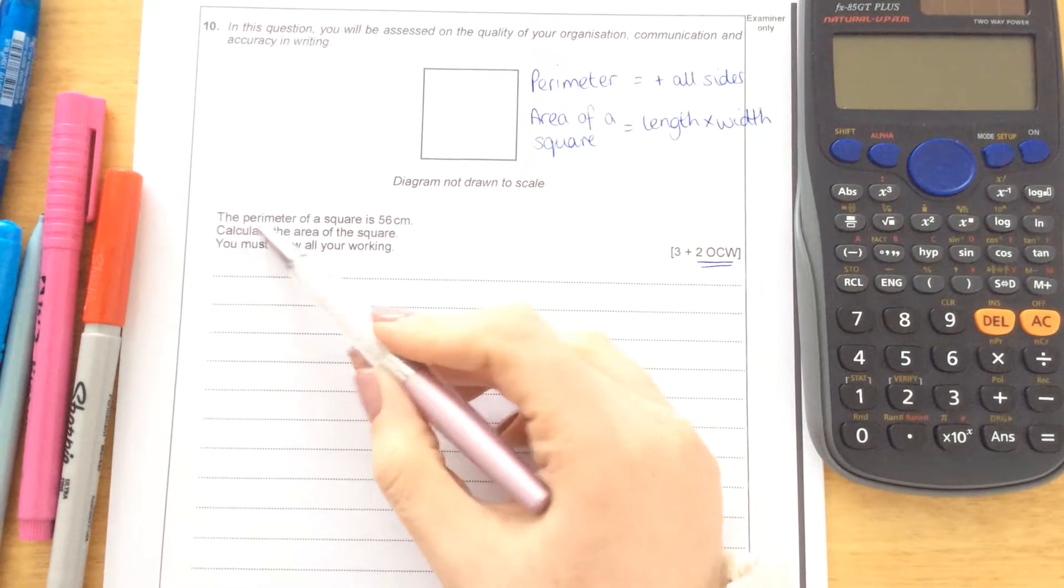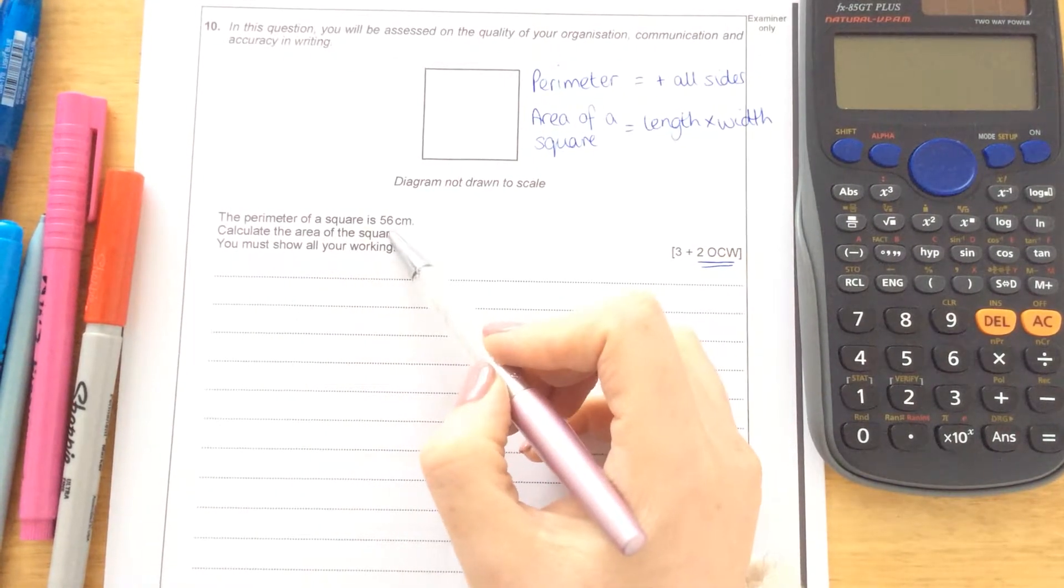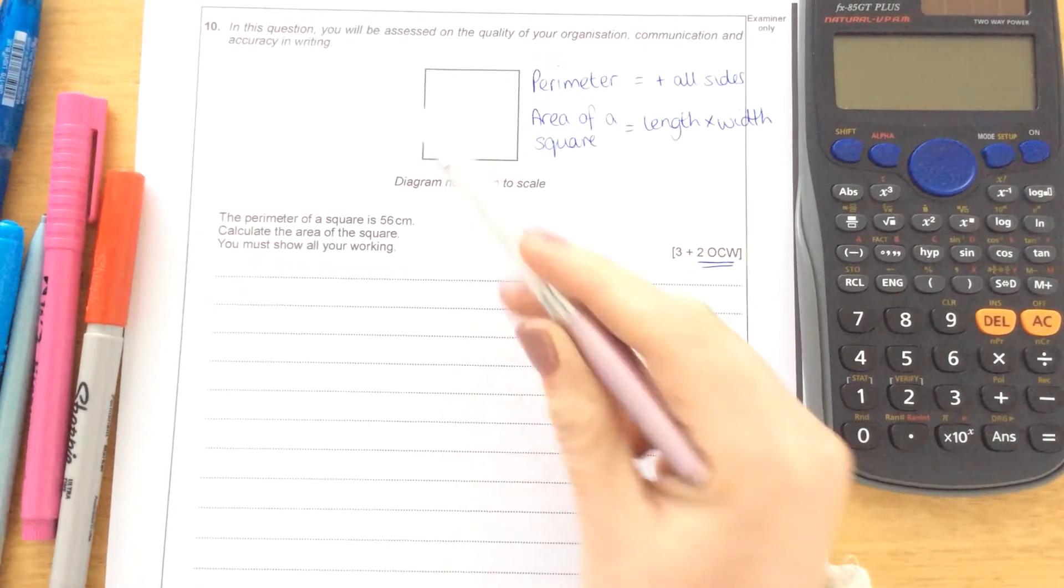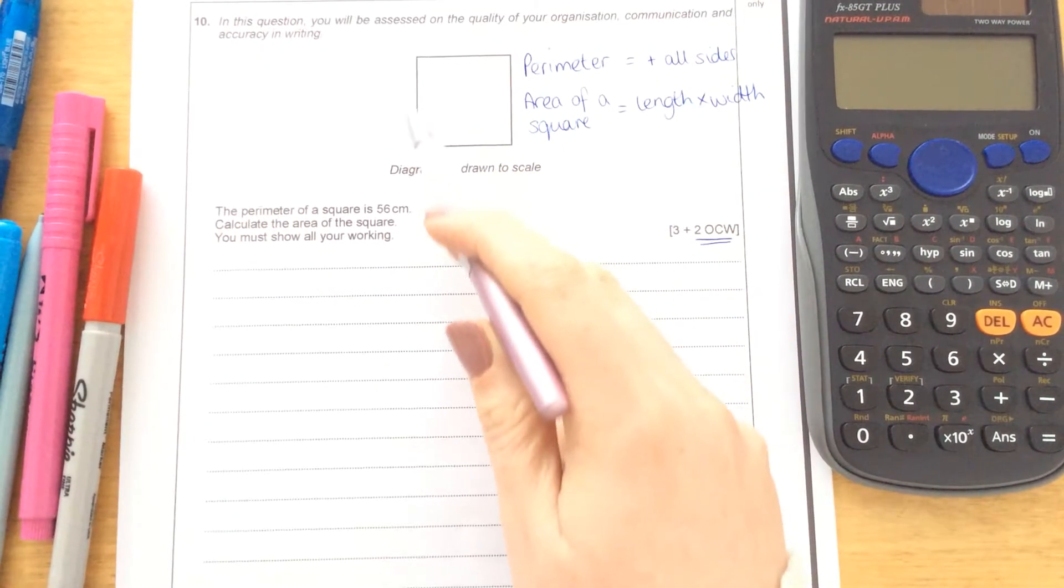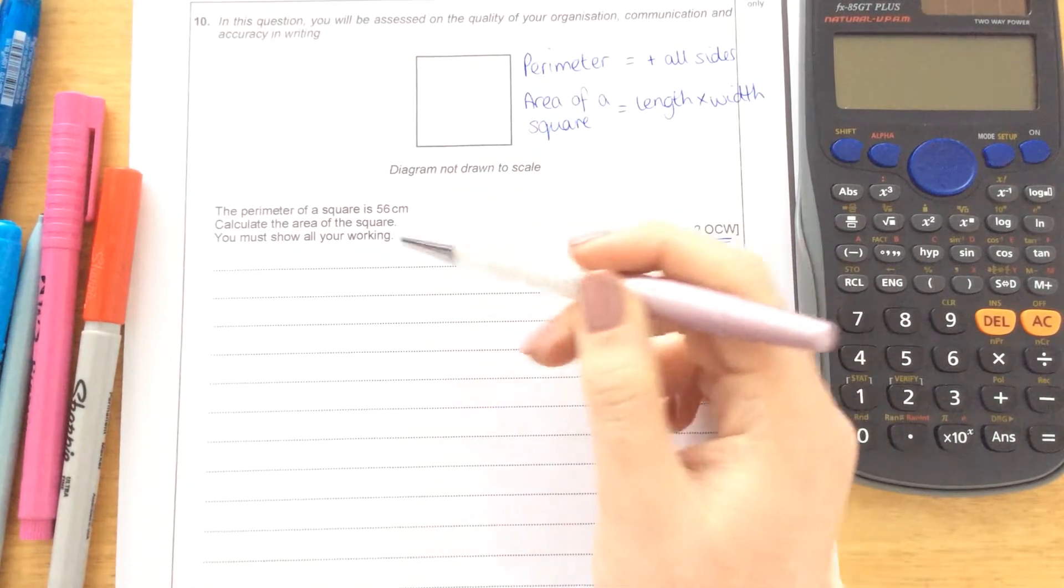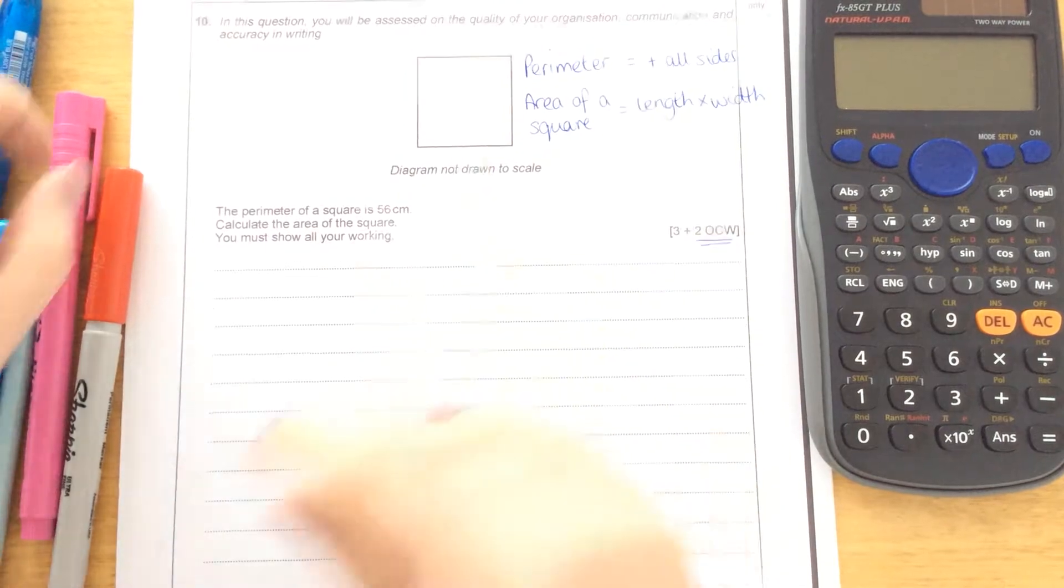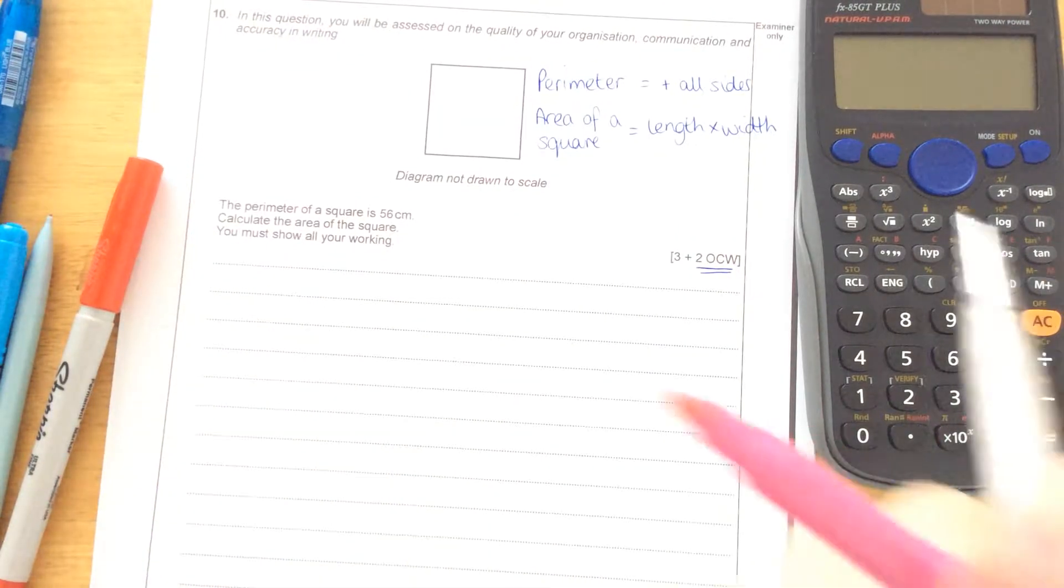This question says the perimeter of a square is 56 centimetres. The perimeter means that you add up all of the sides together. So when we add all of these sides together, it will make 56 centimetres. Calculate the area of the square. You must show all of your working.